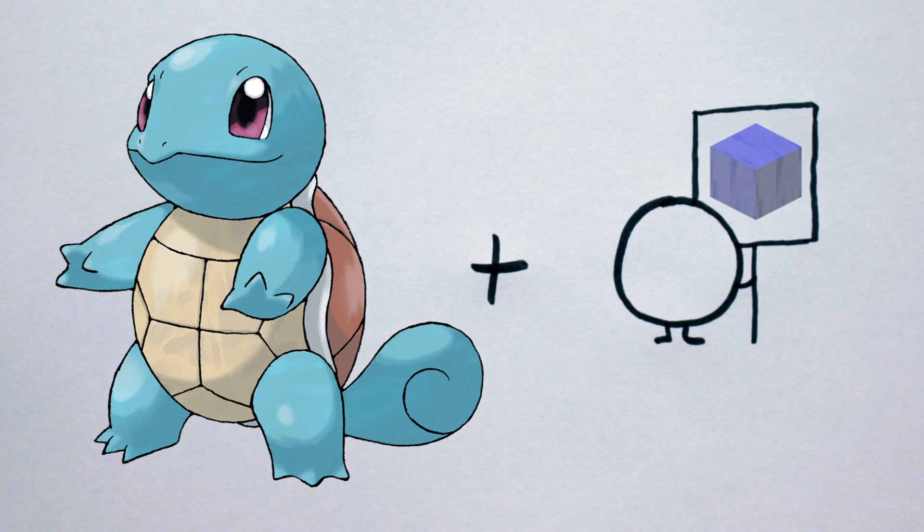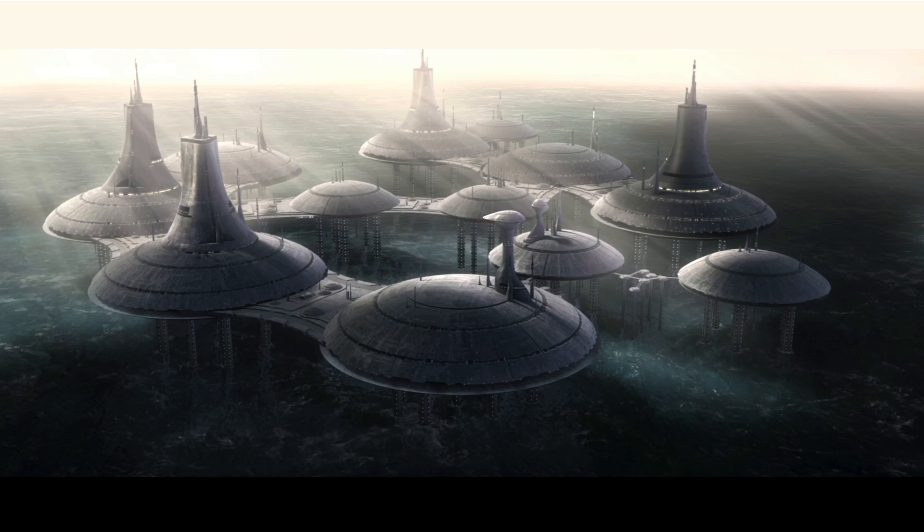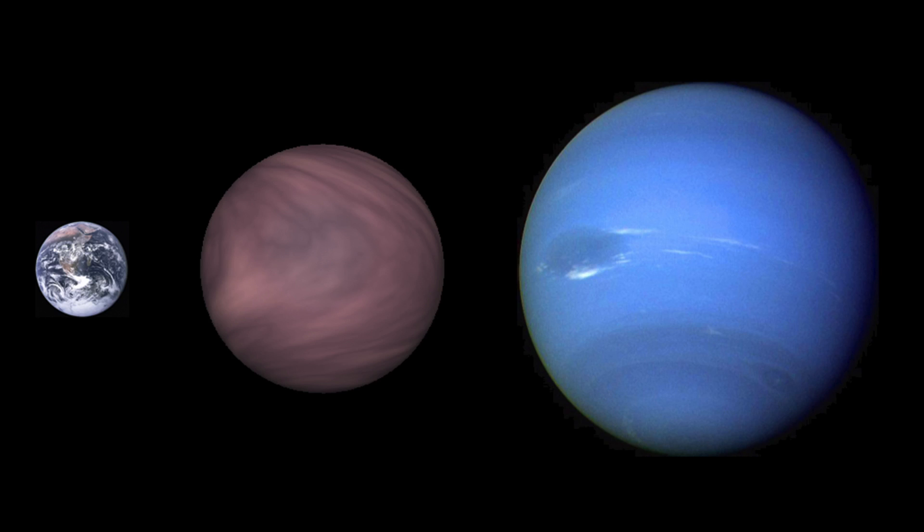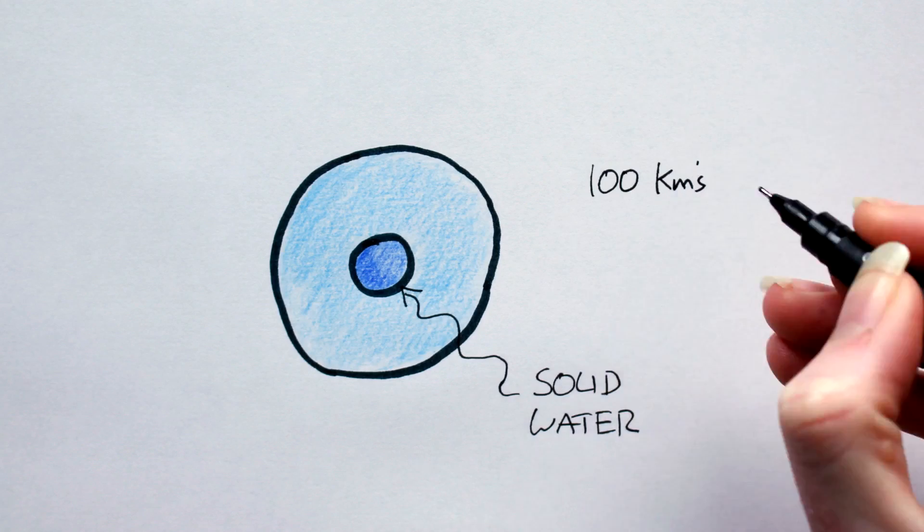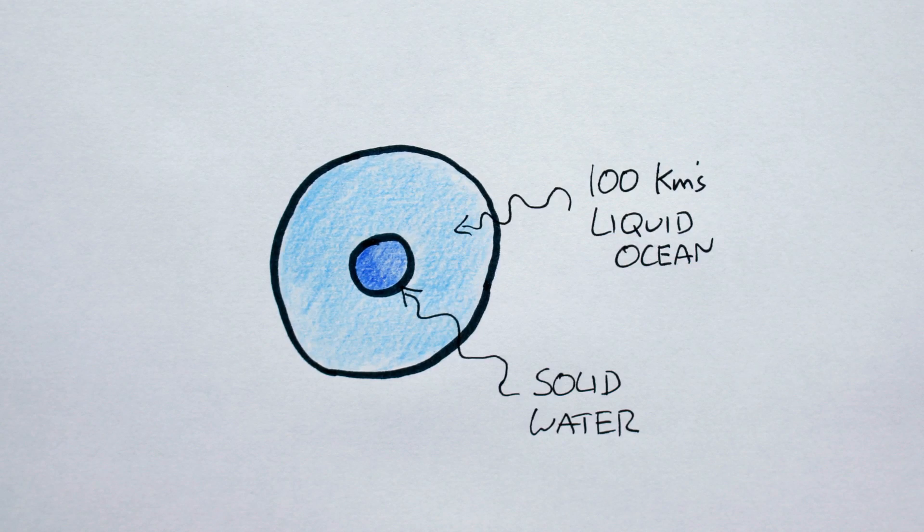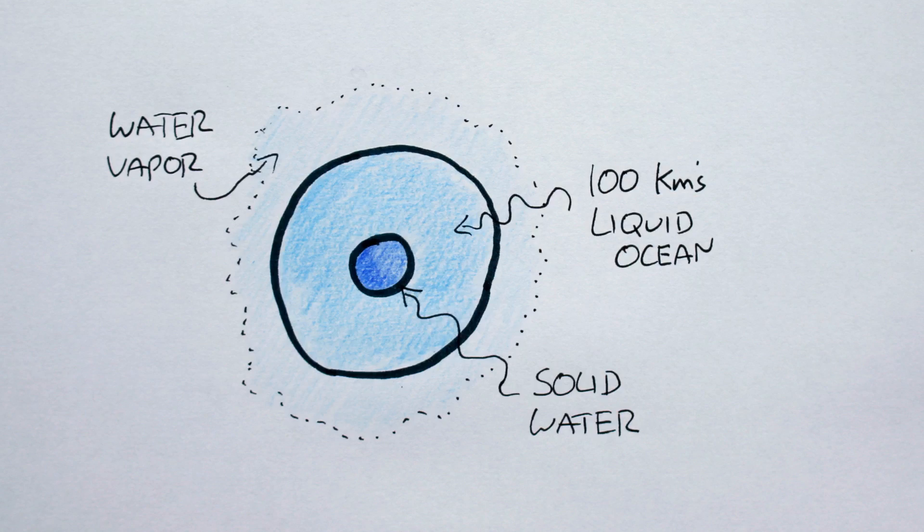An ocean planet or water world like Kamino or GJ1214b is a planet whose mass is primarily composed of water. Such worlds may feature solid water in their bowels, liquid oceans hundreds of kilometers thick, and atmospheres of gaseous water vapor.